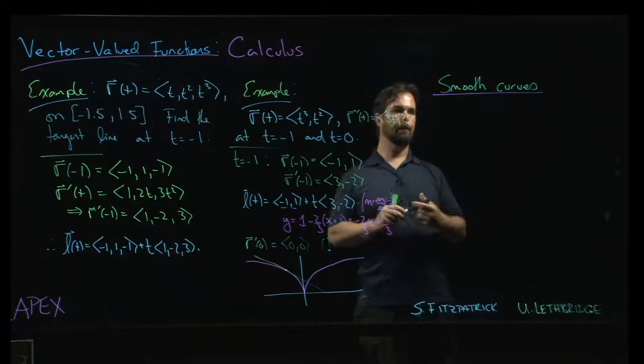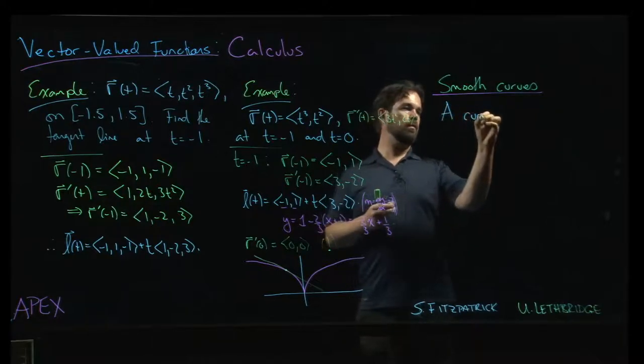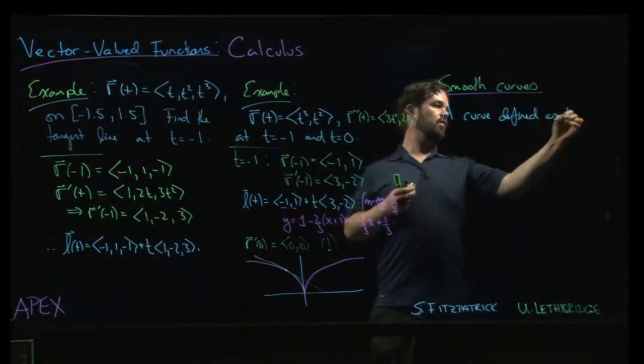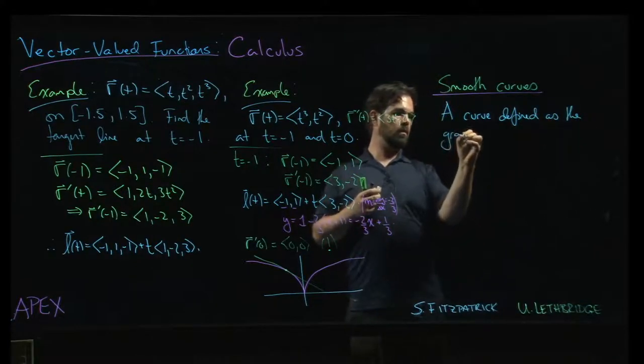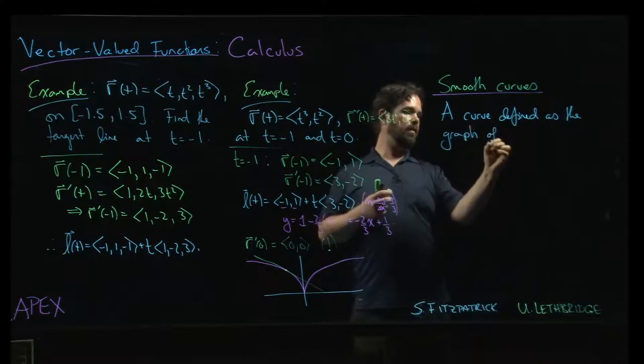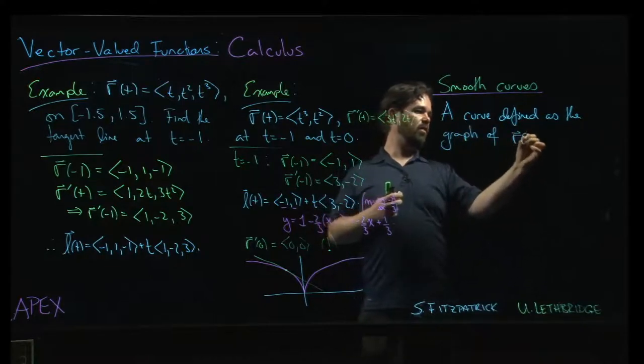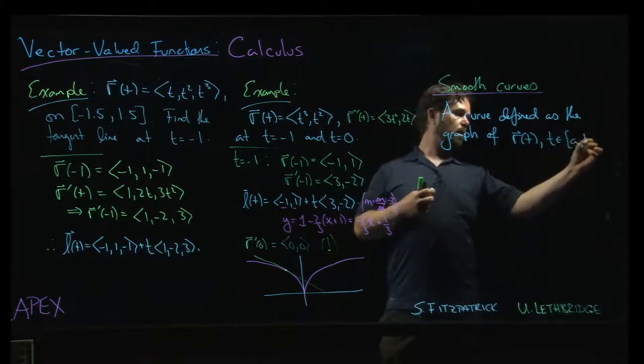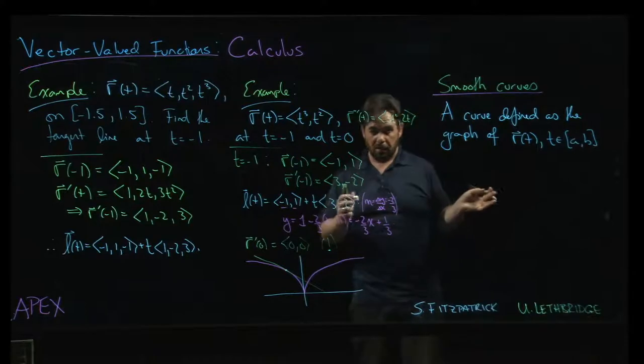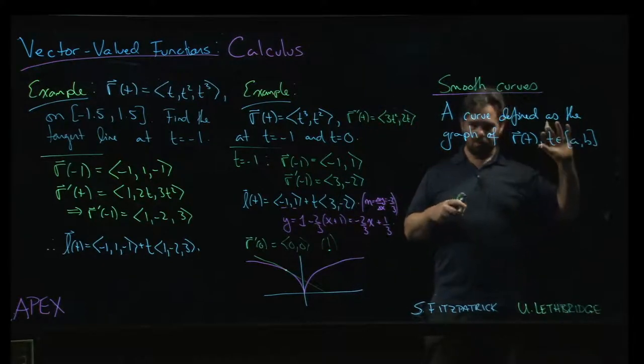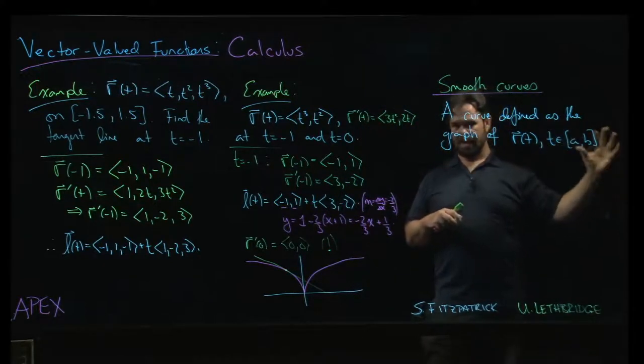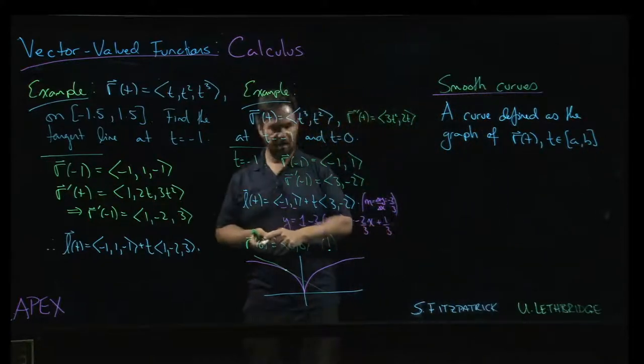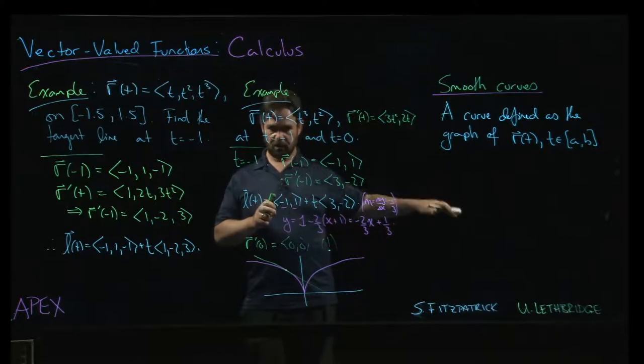So if we have a curve that's defined as the graph of some vector-valued function, let's say r of t, with t, well, maybe it's an open interval, maybe it's a closed interval. We do have that notion of differentiability at an endpoint. We have discussed that, so if you want to talk about differentiability on the closed interval, you can here.